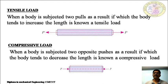Compressive load: when a body is subjected to two opposite pushes, as a result of which it tends to decrease its length, it is known as compressive load. Shear load: when a body is cut across by a section of two equal, parallel, tangential, opposite forces, as shown in the figure, we have two opposite equal parallel forces acting against a resisting body. Bending load: it is the load applied on a body to bend or make a curvature — a load P is applied making a curvature as shown by the dotted line. Torsional load: the load applied on a body to twist is called torsion load.